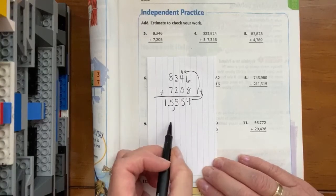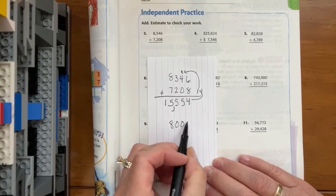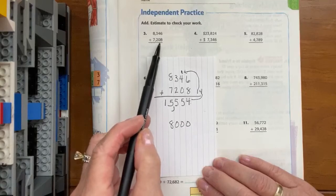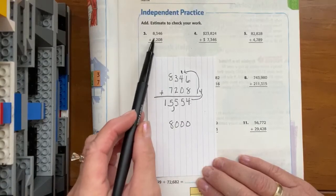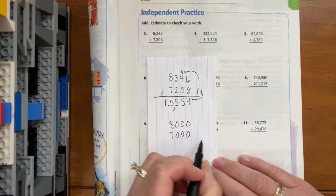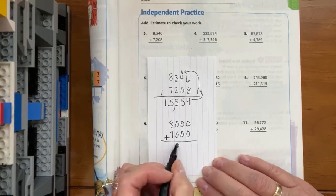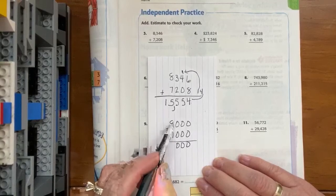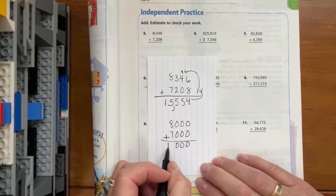And 7,200, is that closer to 7,000 or 8,000? Hopefully you said 7,000. And we love adding with zeros because they make our life so easy. So eight plus seven is fifteen.